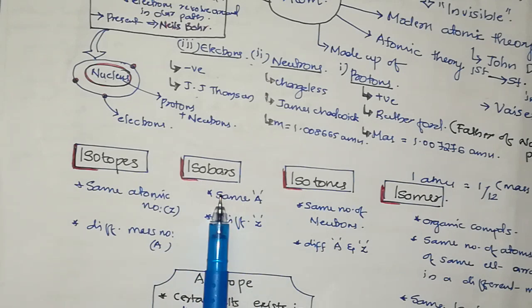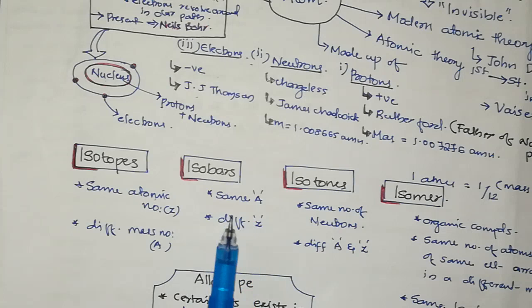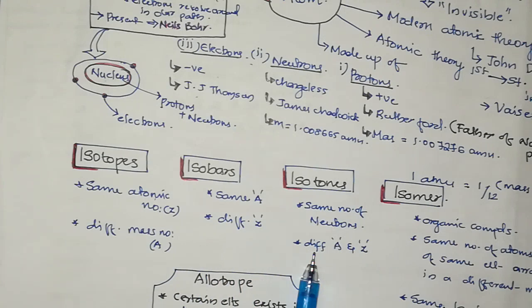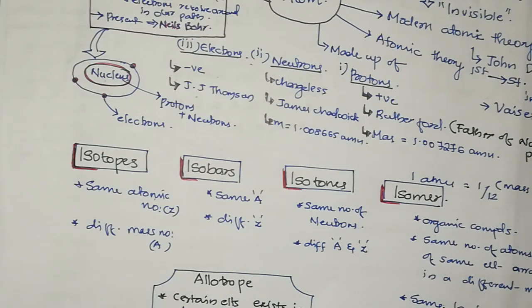Isobars have the same mass number but different atomic number. Isotons have different mass number and different atomic number, but the same number of neutrons.